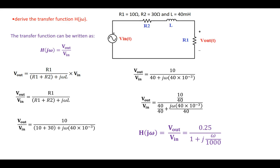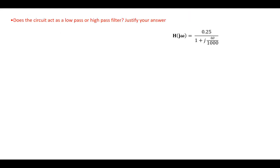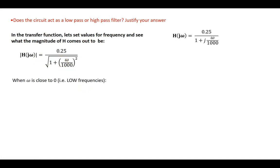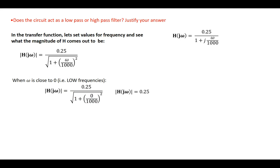The next step is to figure out whether this circuit is a low-pass or high-pass filter. We can set values for frequency and see what the magnitude of the transfer function is. The magnitude is 0.25 divided by the square root of the real part squared plus the imaginary part squared. Setting omega close to 0, we get the magnitude equal to 0.25 divided by the square root of 1 plus 0, which gives 0.25 at low frequencies.